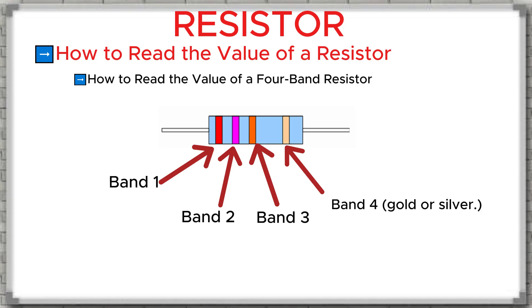You can also think of band three as the number of zeros to add. For example, if band three is red, which means two, you add two zeros. If it is orange, which means three, you add three zeros. Gold or silver appears only in the tolerance band, band number four. For example, if band four is gold, the tolerance is 5%.